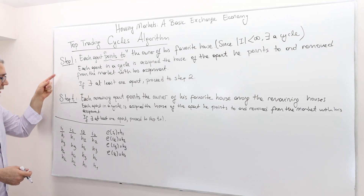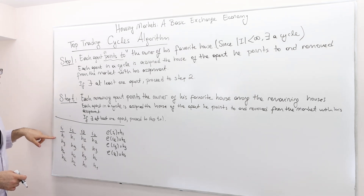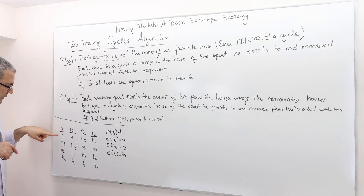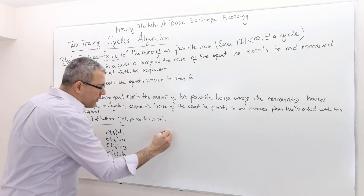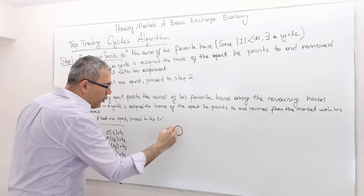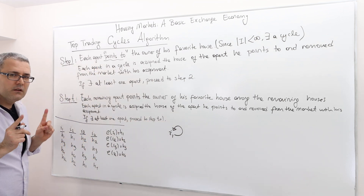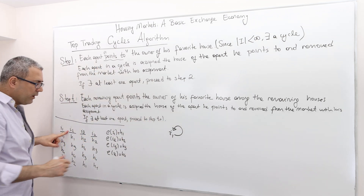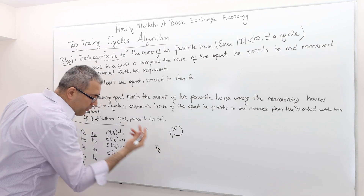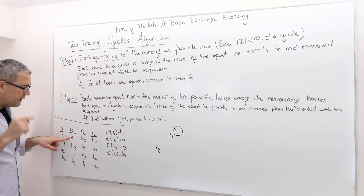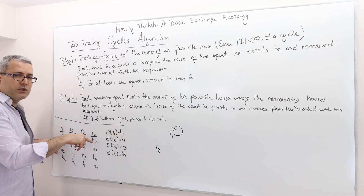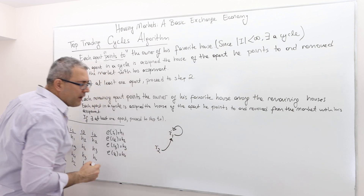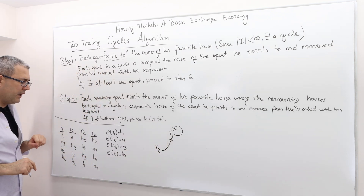In step one, each agent points to the owner of his favorite house. Agent one's favorite house is house one — and who is the owner? Himself. So agent one points to himself. What about agent two? Agent two's favorite house is house one, and the owner of house one is agent one. So agent two points to agent one. What about agent three? Agent three's favorite house is house two, and the owner of house two is agent two. So agent three points to agent two.